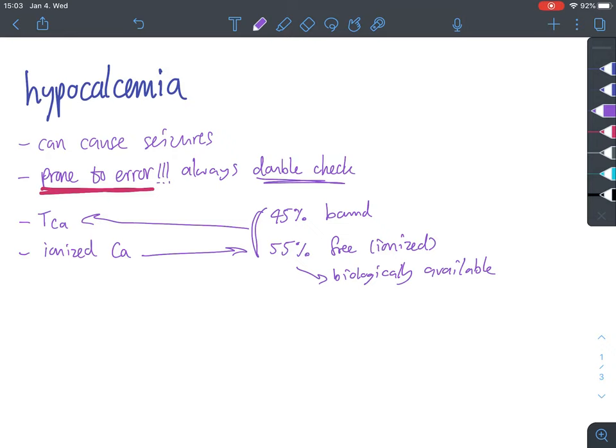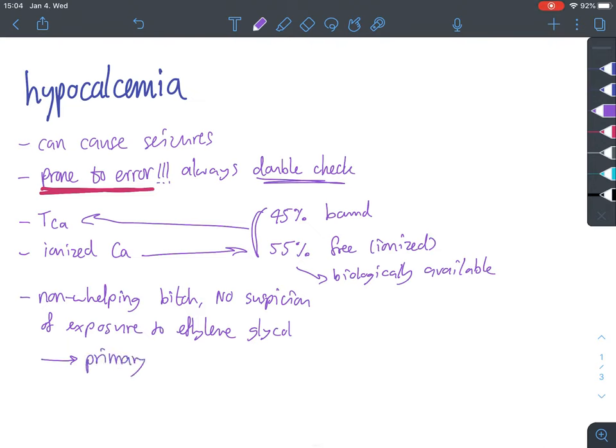So, looking back at what might cause a particular hypocalcemia, let's think about that a little bit. If we have a non-whelping bitch, so not in lactation, which might cause hypocalcemia, and there's no suspicion of exposure to ethylene glycol, which also might cause hypocalcemia, then the most common cause of hypocalcemia is primary hypoparathyroidism.